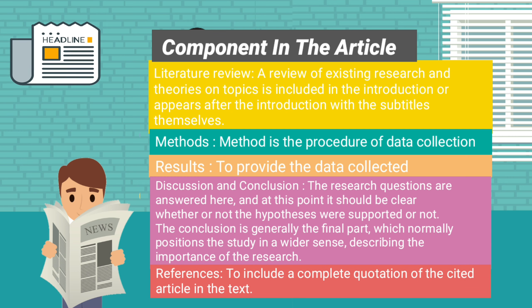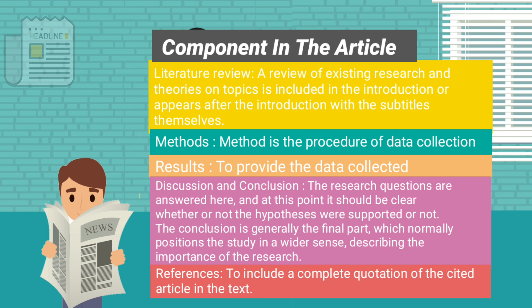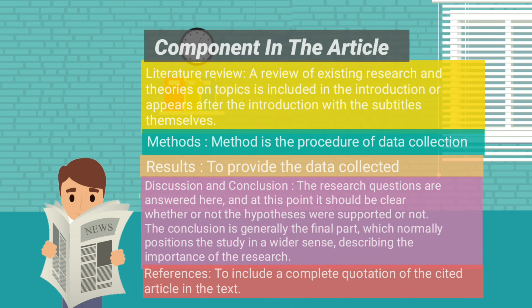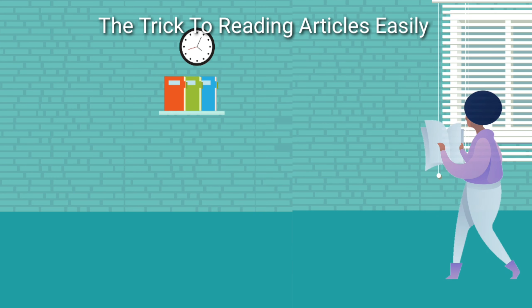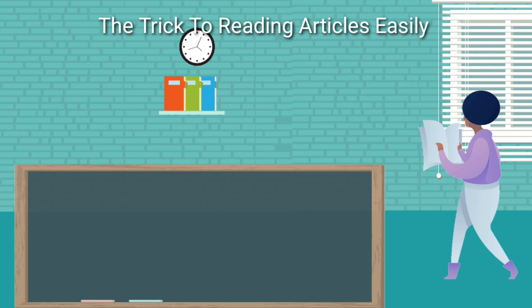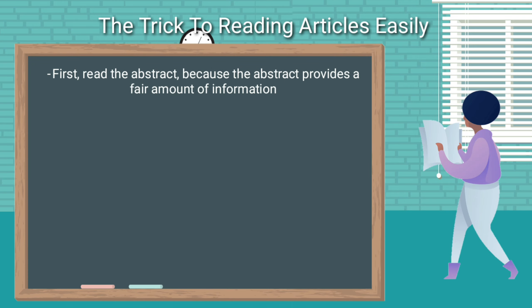References include a complete quotation of all cited articles in the text. The trick to reading articles easily: first, read the abstract, because the abstract provides a fair amount of information.